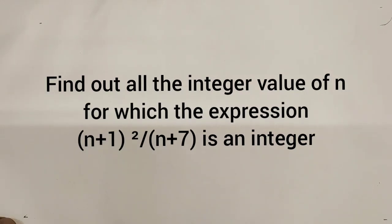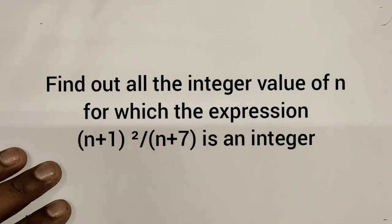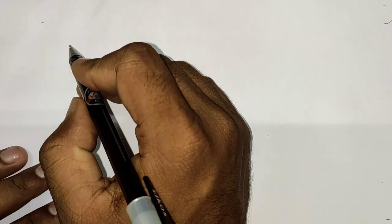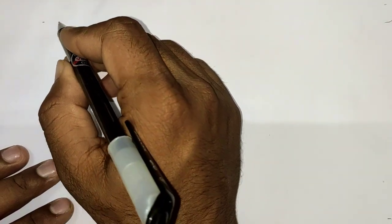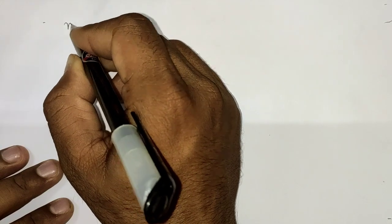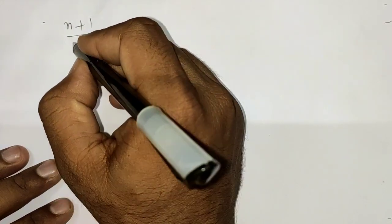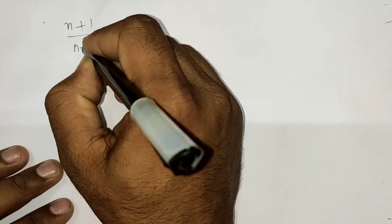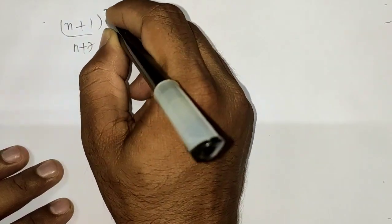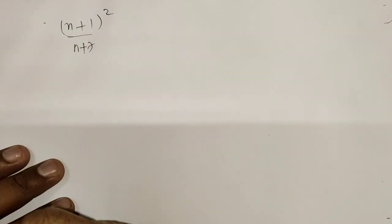Hello everyone, today we are going to solve one number theory problem. We have to find all the integer values for n for which this expression is going to be an integer. I hope you can see it, this is (n+1)² divided by (n+7).